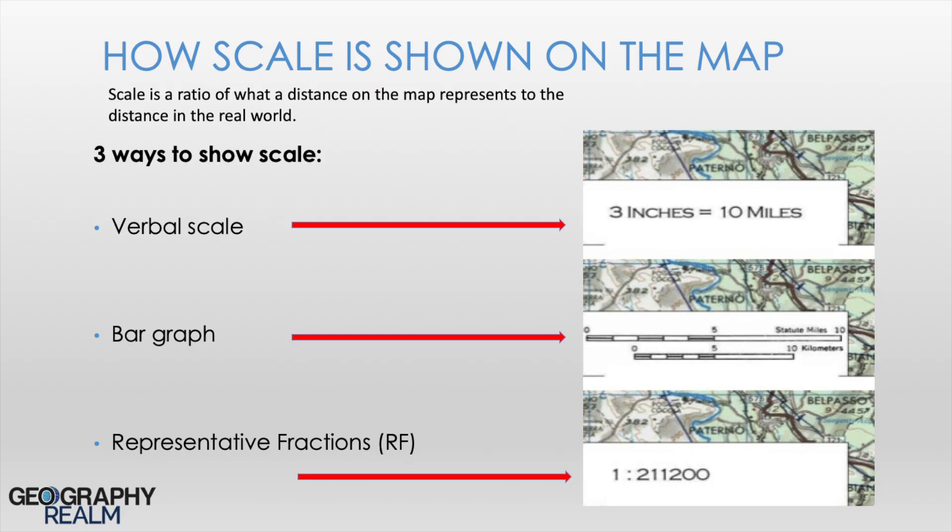Bar scales are a way to visually represent scale. Essentially, bar scales serve as a ruler that shows how the distance on a map represents the distance on the ground.